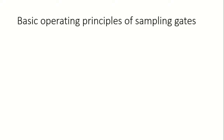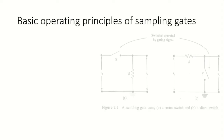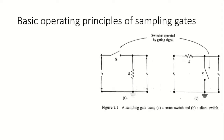Let us discuss the working principle of sampling gates. Consider two figures in which switch S represents the gating signal. In the first figure, this is a sampling gate with a series switch available in series with the input. The input cannot be transmitted to the output unless this switch is closed.